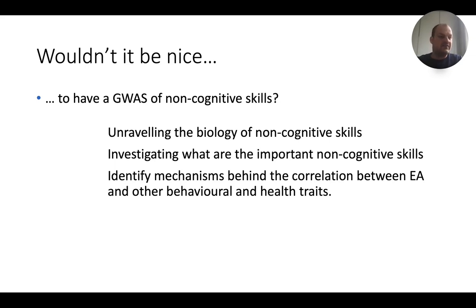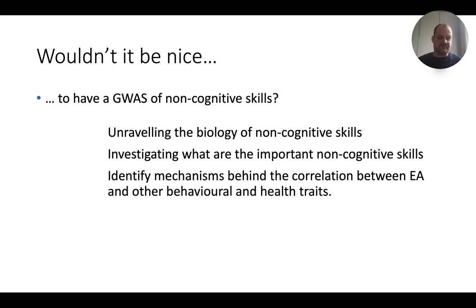Wouldn't it be nice to have a GWAS of those non-cognitive skills? Then you could do all the things you do with GWAS — you can do biology on non-cognitive skills, compute genetic correlations to other traits to figure out which non-cognitive traits are very important for education, and use the summary statistics to do Mendelian randomization to figure out mechanisms behind the correlations between educational attainment and other behavioral traits.